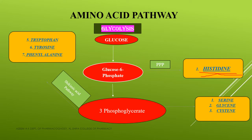From 3-phosphoglycerate, three different amino acids are biosynthesized: they are serine, glycine, and cysteine. These are the three amino acids synthesized from 3-phosphoglycerate. So in the initial step: glucose is converted to glucose 6-phosphate, which enters into the pentose phosphate pathway and gives histidine; then glucose 6-phosphate is converted to 3-phosphoglycerate, which gives serine, glycine, and cysteine.